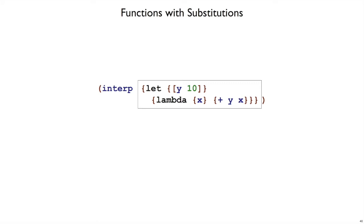Let's set up some examples of our interpreter. First, assuming that we have substitutions. So if we had substitutions, what should be the result when interpreting this expression? Here I'm letting y be 10, and then I have lambda x add x to y.